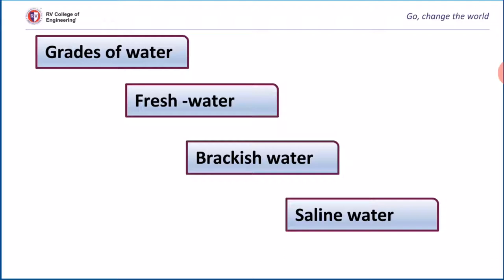Water is one of the precious gifts to all living creatures. Our earth is covered with three-fourths water, but the availability of potable water is less. Compared to India, in Gulf countries potable water is still less. For them seawater is more abundant, but as it cannot be used for other purposes, it needs to be purified and we have to separate the salts present in it.